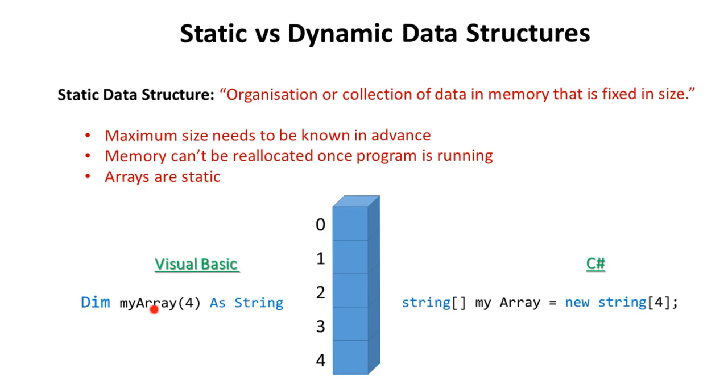We can see here some code in Visual Basic and C sharp and the actual line of code declared at the point where the array is written in the code how big that data structure is going to be. When the program is run the data structure is created with this fixed size. It doesn't matter how much of this data structure actually ends up getting filled, it will always be this size and it can't grow or shrink while the program is running.